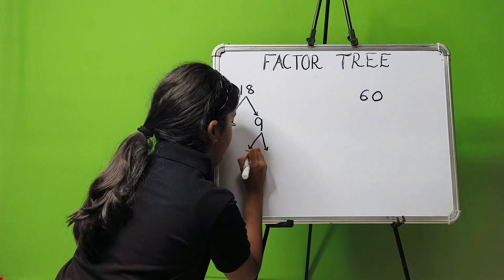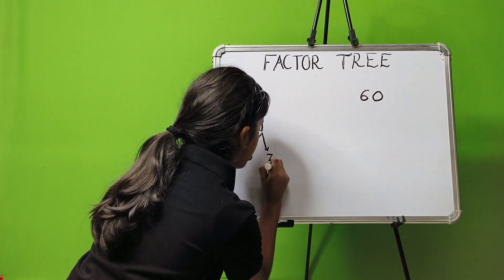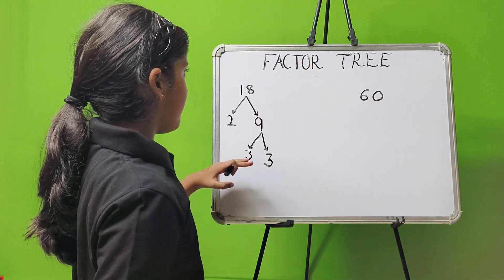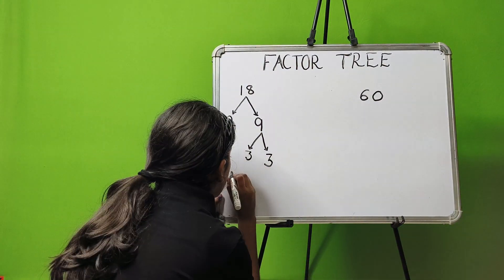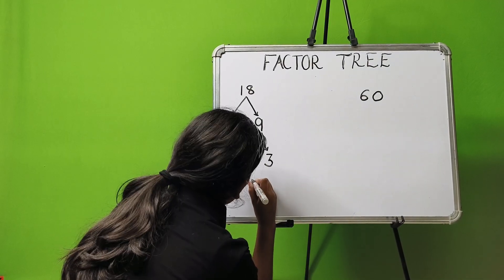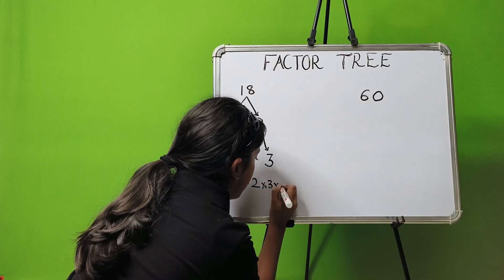Now, I am writing here 3 and here 3. Now, 3 is a prime number. So here our factor tree is finished. So 18 is equal to 2 multiply 3 multiply 3.